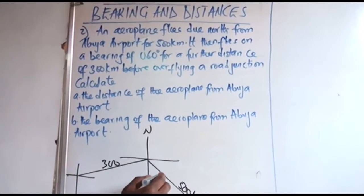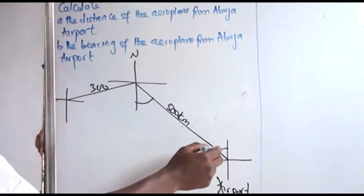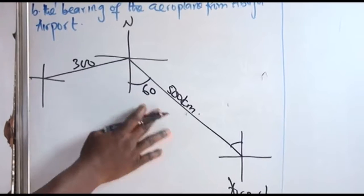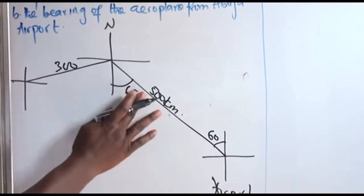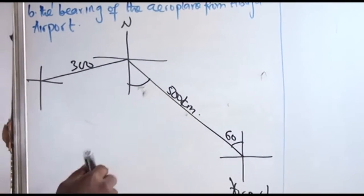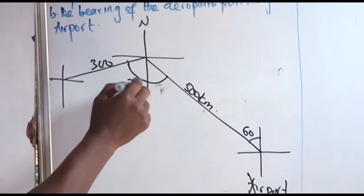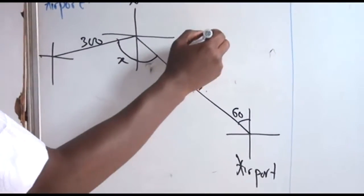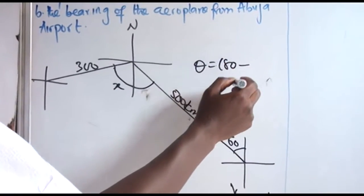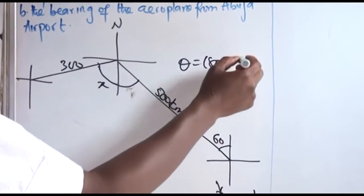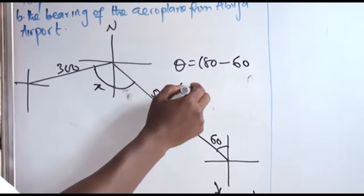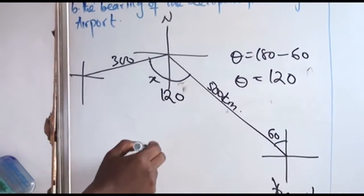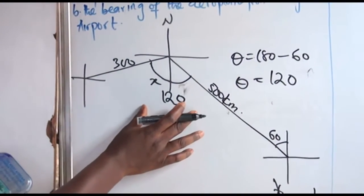And our bearing here will be what? You know what we have here? Our bearing here will be 180, 60. Our bearing here will be 60. Now the second one is unknown. So again, the total bearing here, we want to say that our theta will be what? 180 minus what? 180 minus 60. So theta equals to 120 degrees. So our bearing angle here is going to be 120.